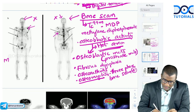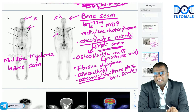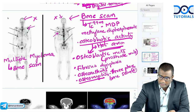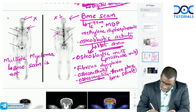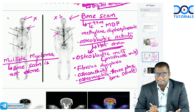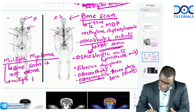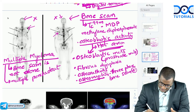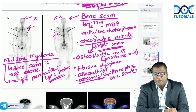In multiple myeloma, do we do a bone scan? No — bone scan is not done in multiple myeloma. The reason is that multiple myeloma produces osteolytic lesions — multiple punched-out lytic lesions. Since we have lytic lesions and not blastic lesions, a bone scan is useless in multiple myeloma. Remember this important point.